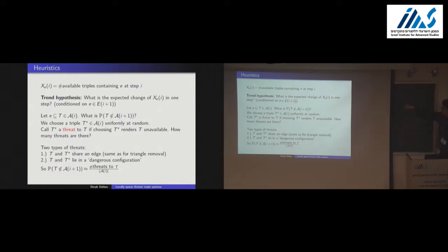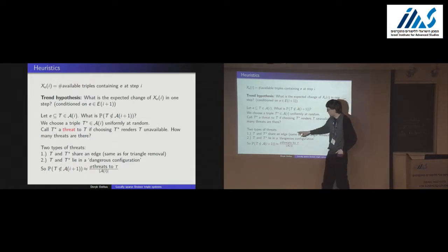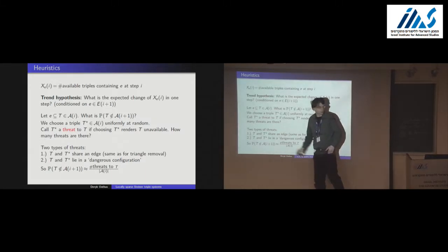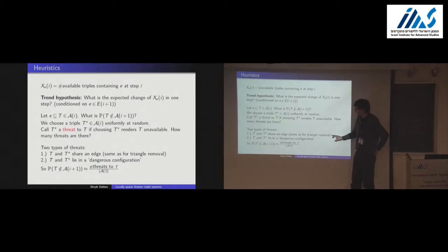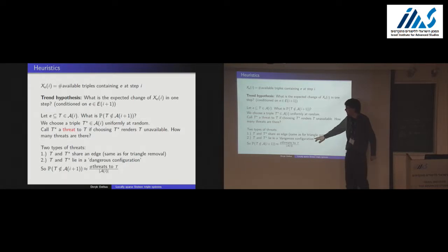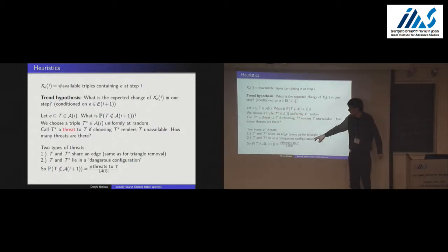There are two types of threats. If the random T* shares an edge with T, then T is no longer available — as in the triangle removal process. In our Erdős process, T also becomes unavailable if together T and T* form what we call a dangerous configuration, which might result in a Pasch configuration for instance. The probability of becoming unavailable is the number of threatening T*'s divided by the whole set of available triples.